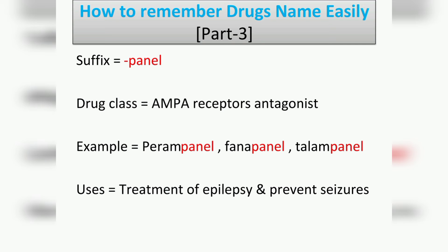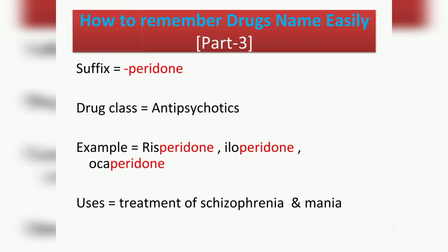The next suffix is '-panel', which belongs to the drug class AMPA receptor antagonists. Examples include perampanel, fampanel, and talapanil. Their usage is the treatment of epilepsy and prevention of seizures.